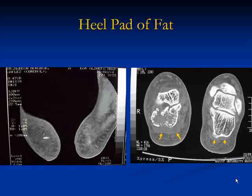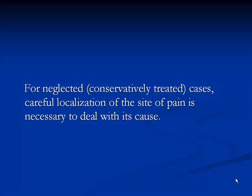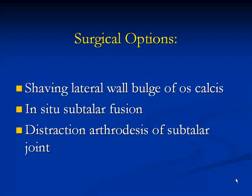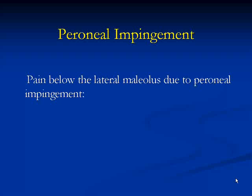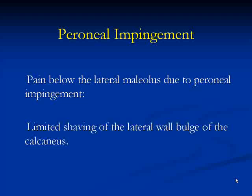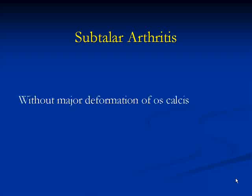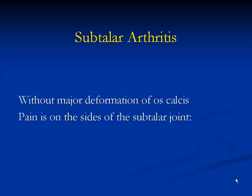For neglected cases, careful localization of the site of pain is necessary to address its cause. Surgical options include shaving of the lateral wall bulge, in-situ fusion, or distraction arthrodesis. If there is peroneal impingement with pain below the lateral malleolus, limited shaving of the lateral wall bulge gives a reasonable result. If there is subtalar arthritis due to incongruity without major deformation, the treatment is subtalar fusion in situ.